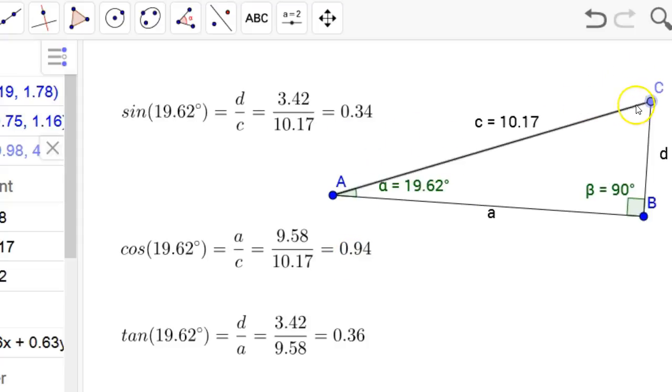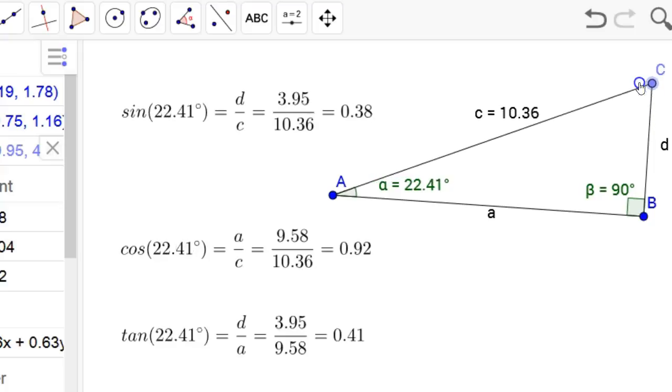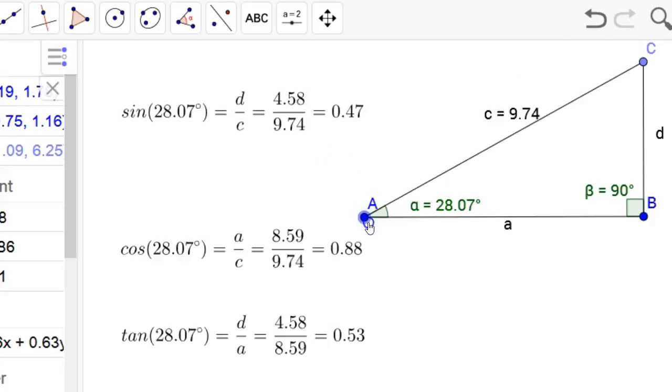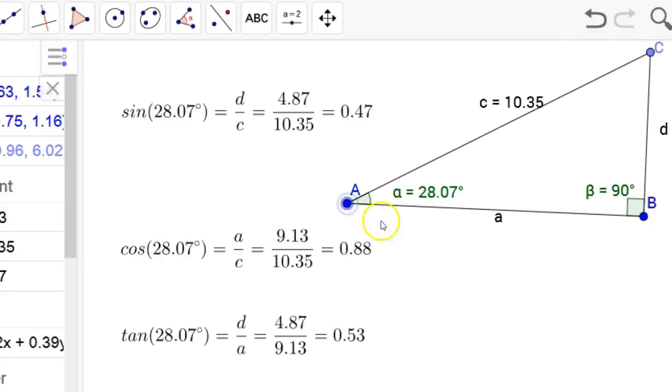That's really why we can use it. Now if you change the angle, so let's change it to maybe 28 degrees. So in that case, now my sine of 28 degrees, approximately 28.07, is 0.47. Cosine is 0.88. Tangent, tangent of 28 is 0.53. Again, notice how these numbers have changed.